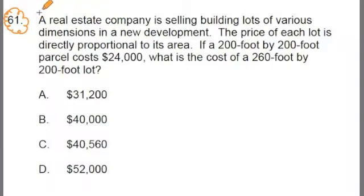We'll cut to our Oberlin intern Conti to talk about direct proportionality, and then we'll come back and we'll work through the math to solve the problem. Alright, so let's start. Let's read it over, visualize what's going on as I read it. A real estate company is selling building lots of various dimensions in a new development. The price of each lot is directly proportional to its area. If a 200 foot by 200 foot parcel costs $24,000, what is the cost of a 260 by 200 foot lot? Now read this to yourself. Try and organize the information.